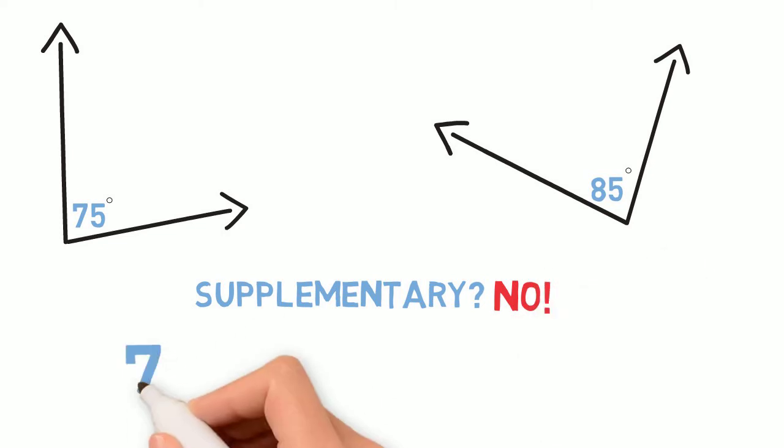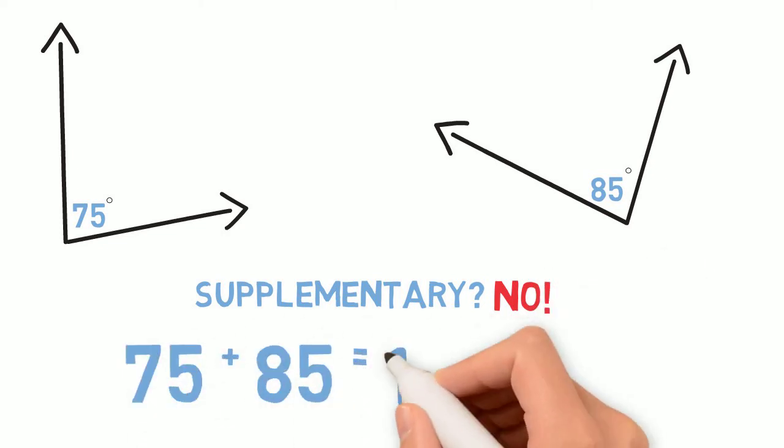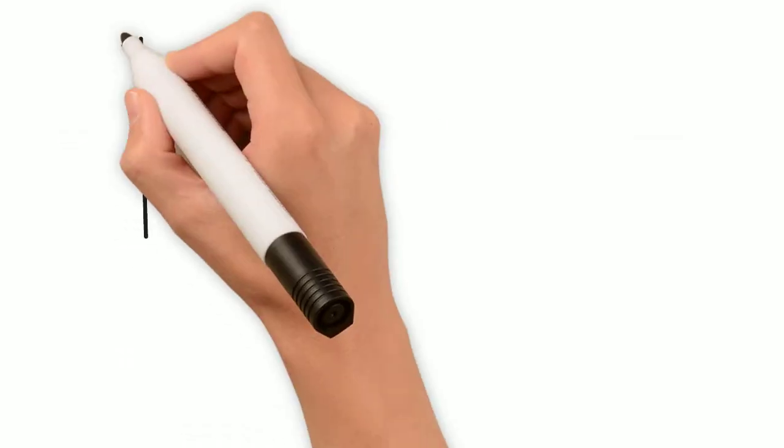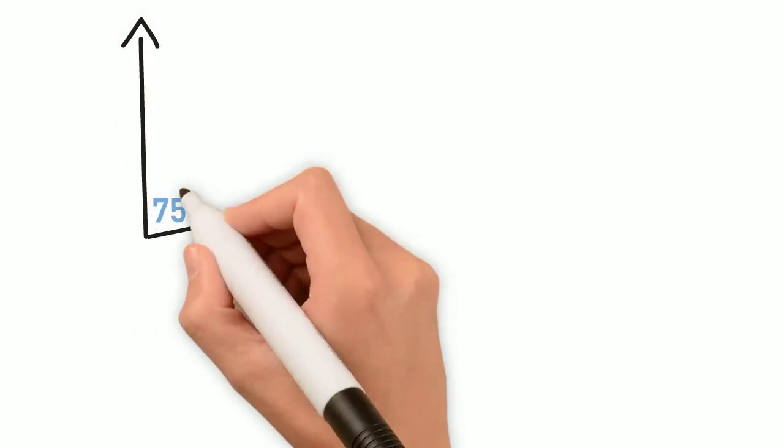When you add 75 and 85, it equals 160, not 180. So then what angle measurement with 75 would make a supplementary angle?